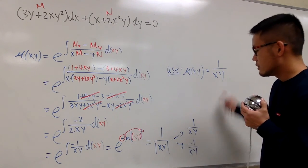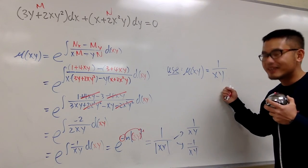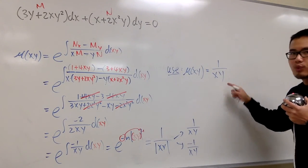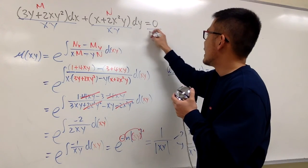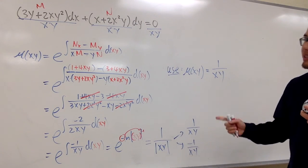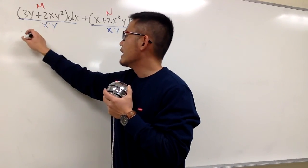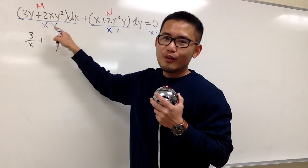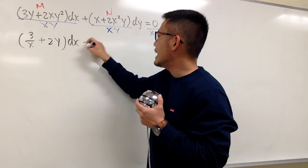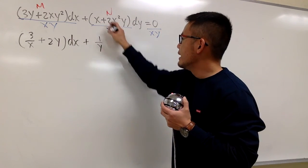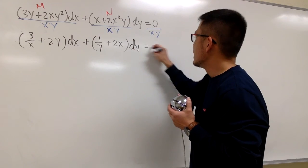Once we know 1/xy is the special integrating factor, multiply everything by 1/xy — which is the same as dividing each term by xy. After that, the equation becomes exact. Here we have 3y/xy = 3/x, and 2xy²/xy: the 2 stays, x cancels, and y²/y = y, with dx. Then we add x/xy = 1/y, and the next term: 2 stays, x²/x, y cancels. This is with dy, equal to zero.